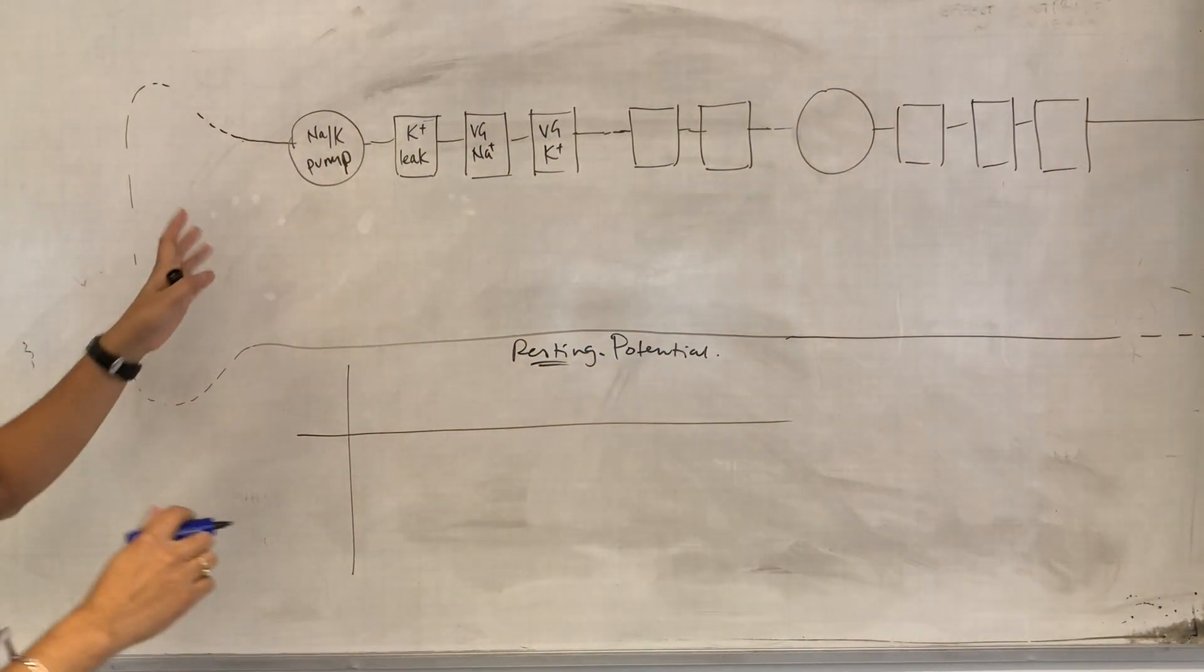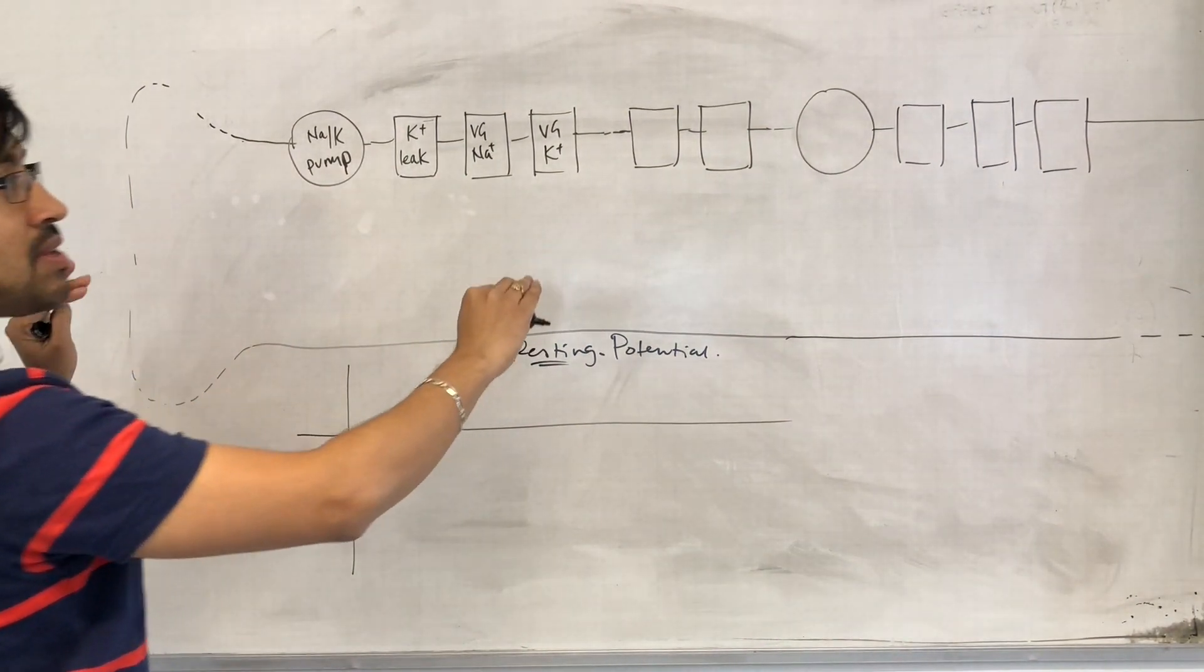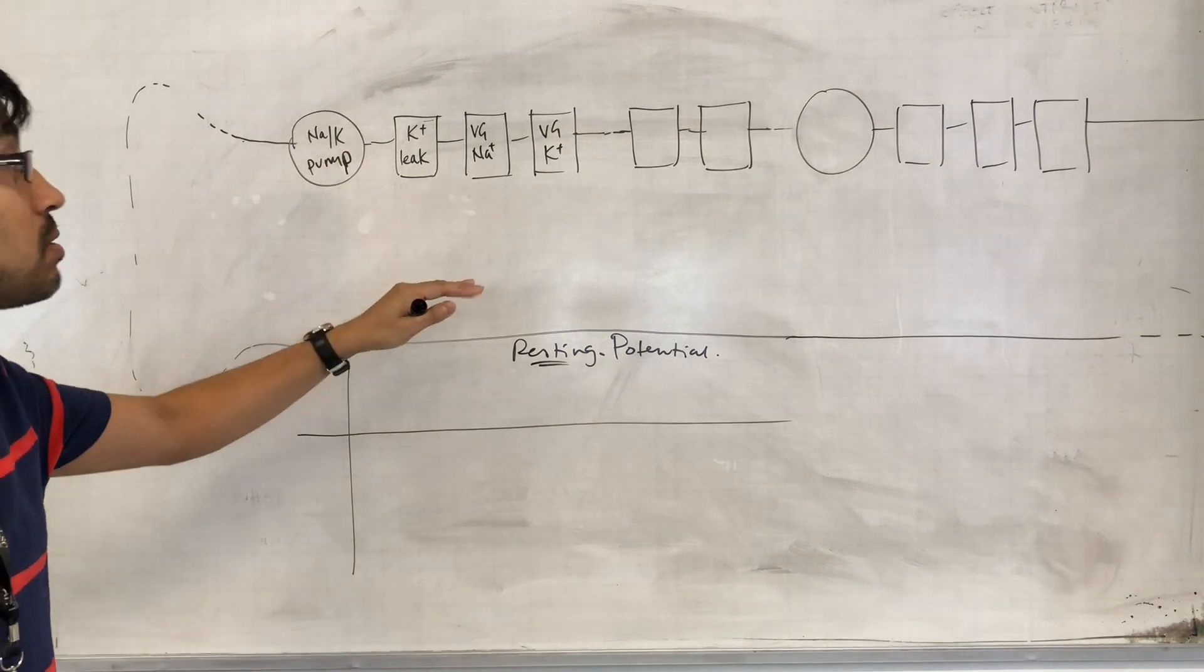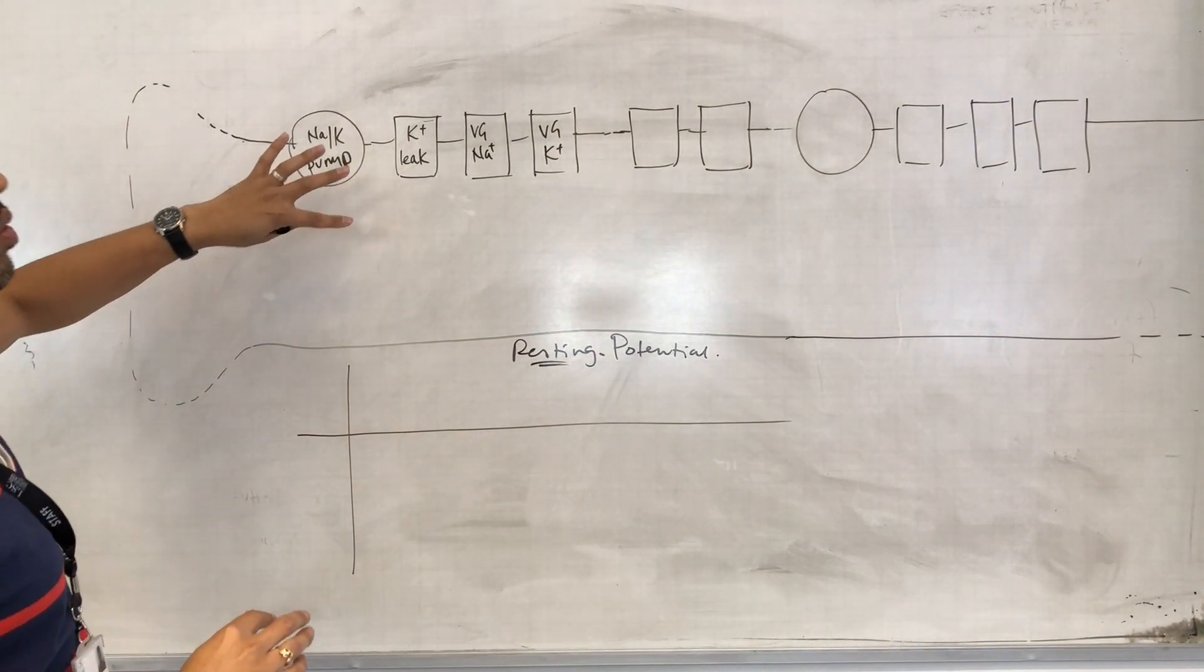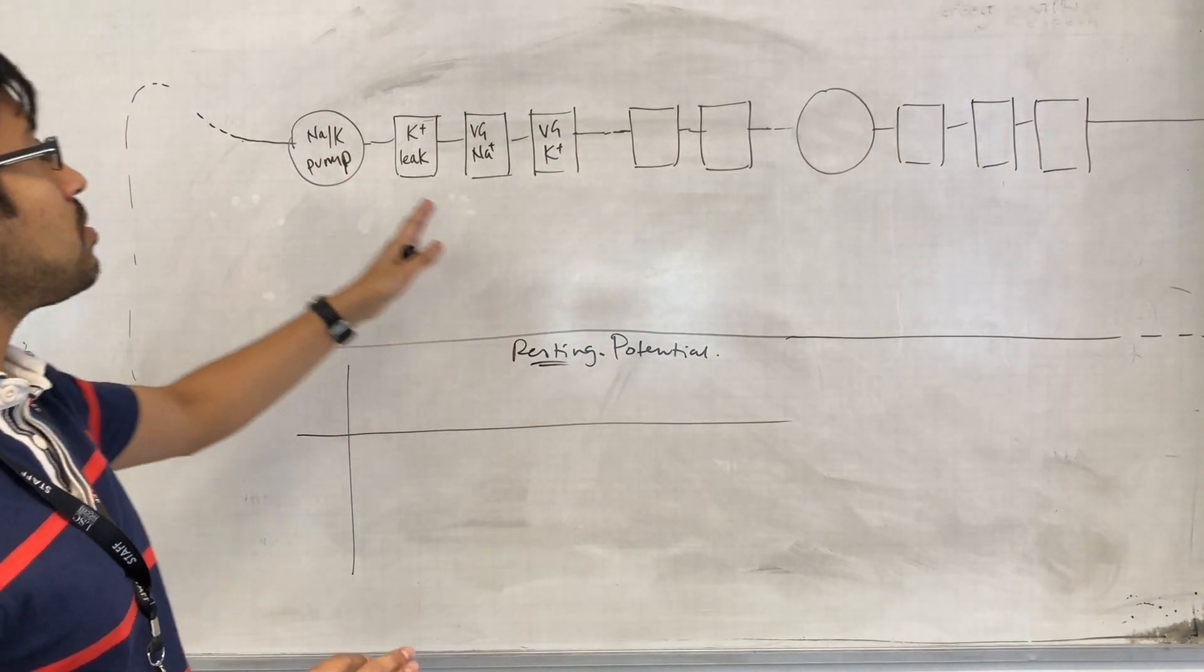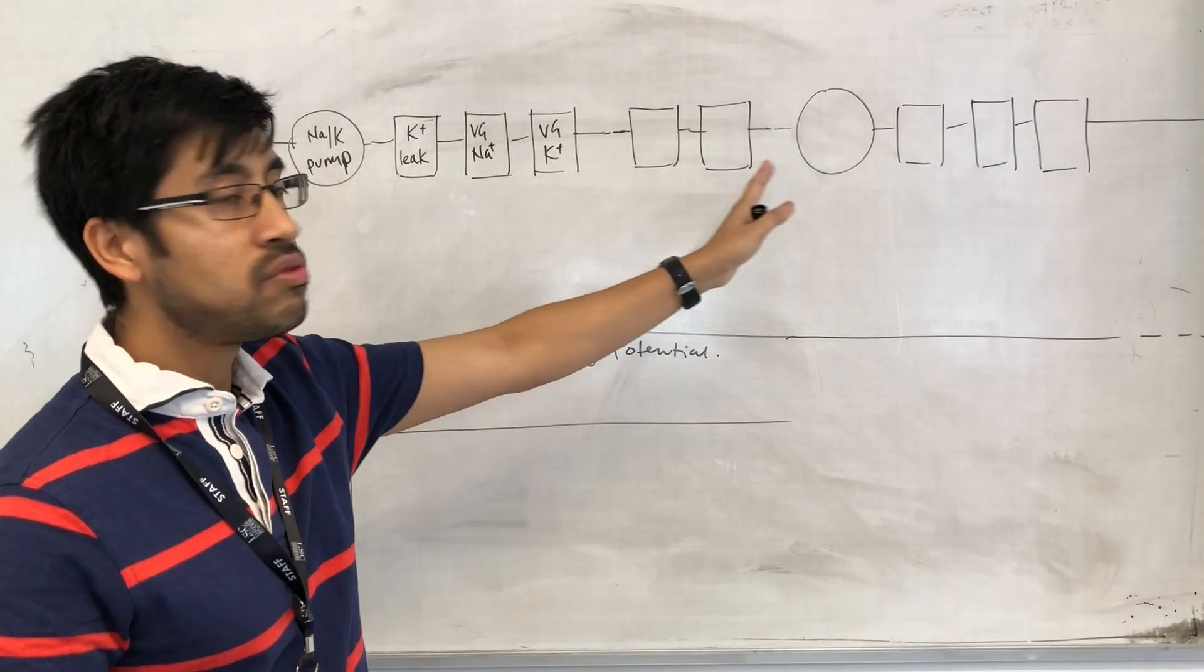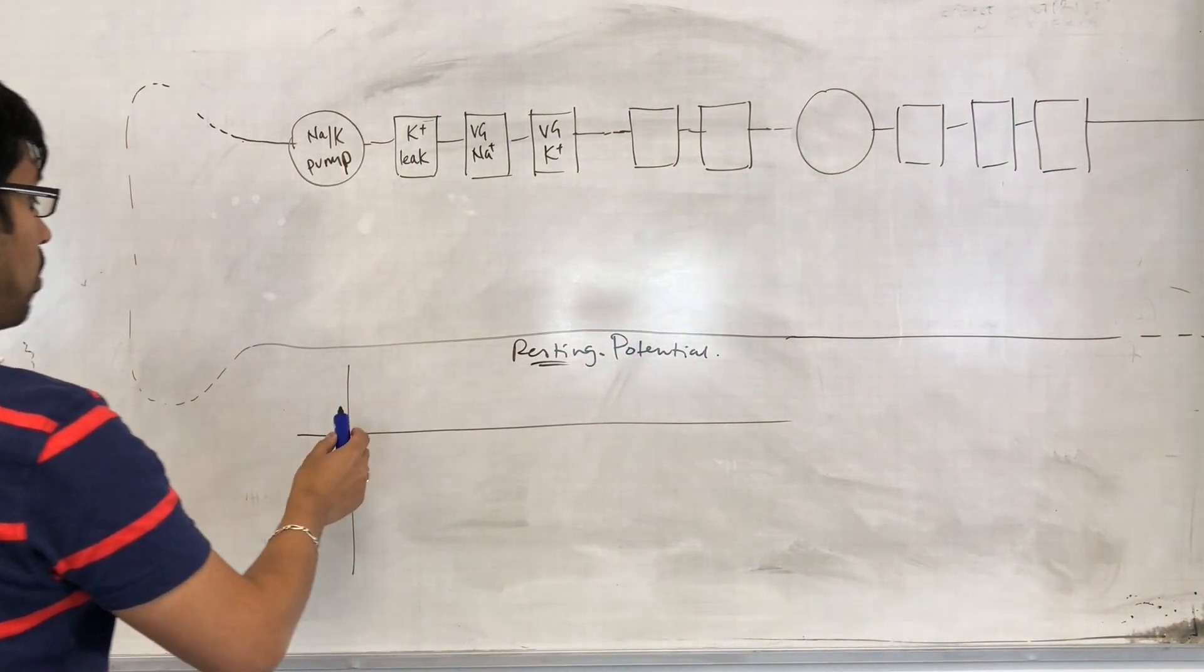So there's a certain kind of electrical state that the axon maintains itself in when there's no signal, and then we'll look at what causes the change to that that constitutes an action potential and how then does that move down the axon.